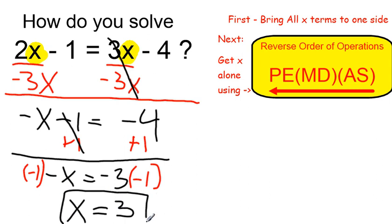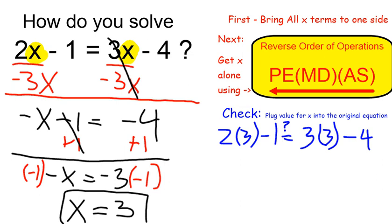So I'm claiming that x is equal to 3. I can check this by plugging the value of 3 in for x in the original equation and seeing if it is in fact true.